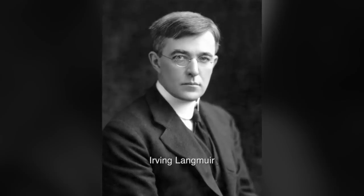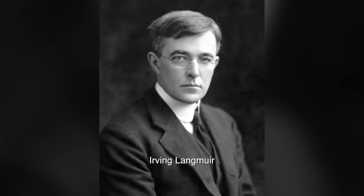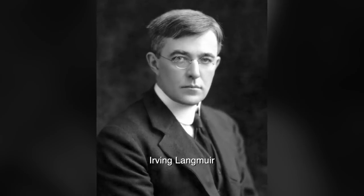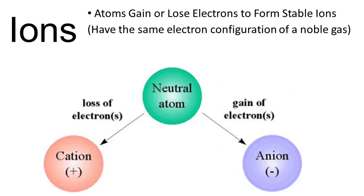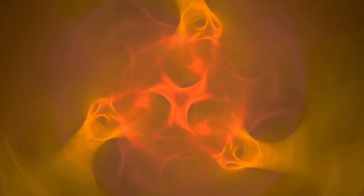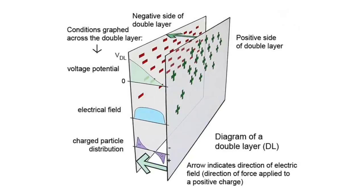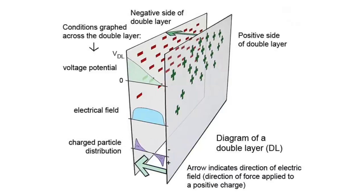Irving Langmuir could provide some enlightenment here. He's dead but his discoveries linger on. One discovery was that just a few ions in a substance can cause it to behave in unexpected ways. It forms cells and filaments. Charges separate into double layers that insulate cells from each other.